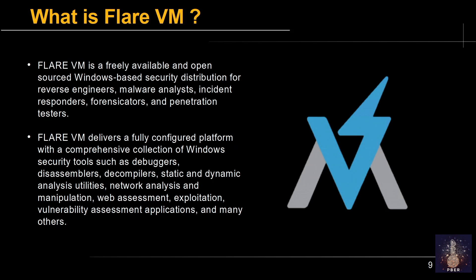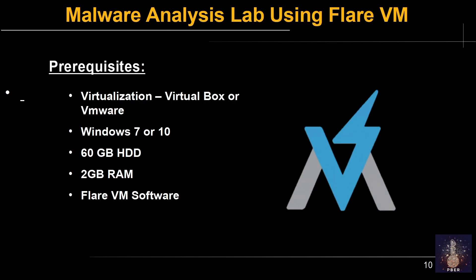These are the prerequisites for Flare VM. You need virtualization software — it can be VirtualBox or VMware; for this demonstration I'm using VirtualBox. You need a Windows 7 or Windows 10 guest operating system. You need at least 60 GB hard disk, 2 GB RAM, and the Flare VM software.